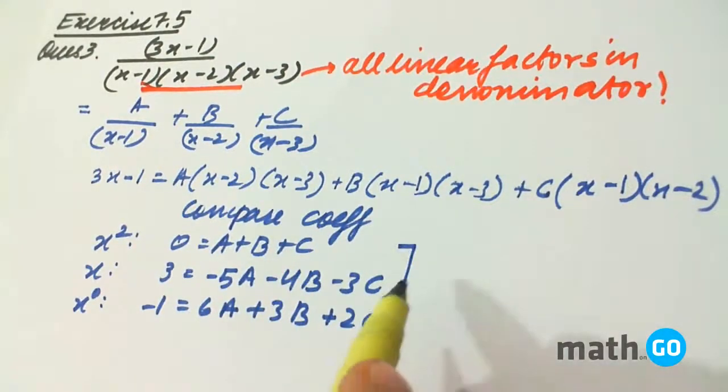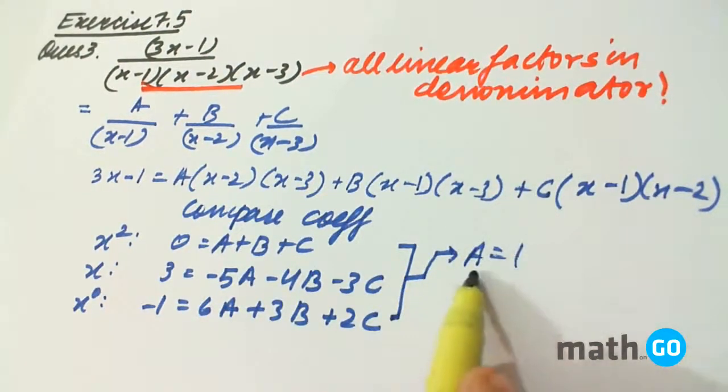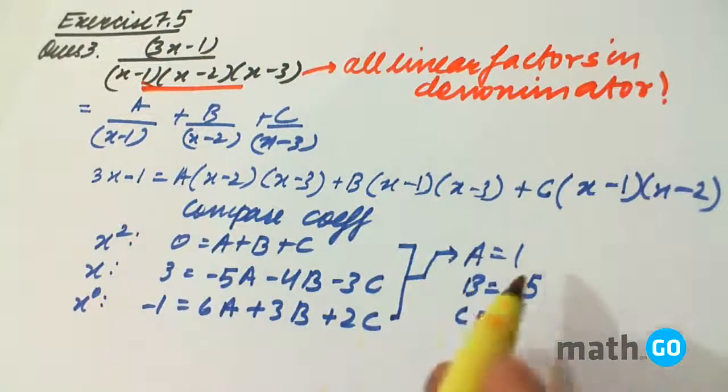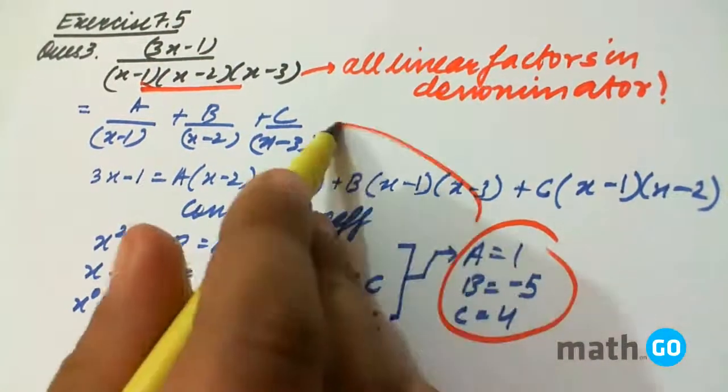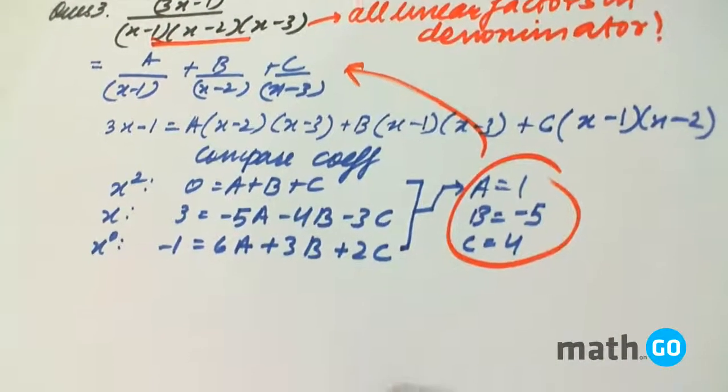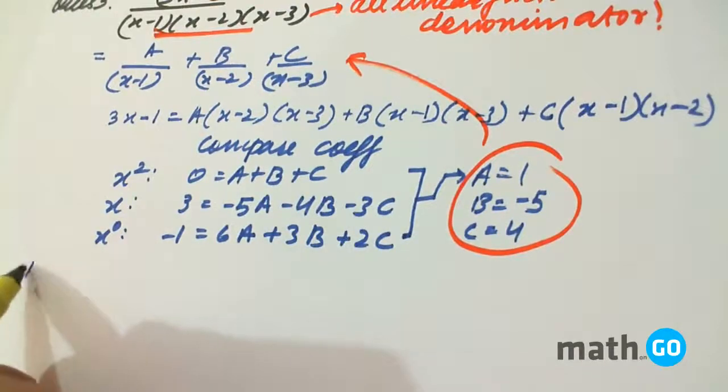We have 3 simple equations. We will solve them to get A equals to 1, B equals to minus 5, and C equals to 4. So simply putting these values in this and integrating, let's see what we get.